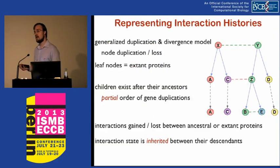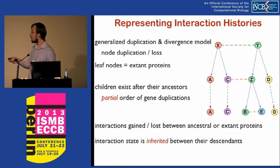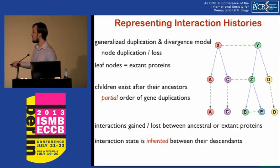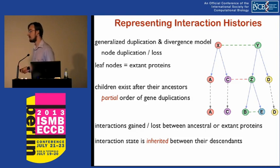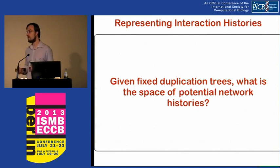We're looking at a generalized duplication and divergence model of interaction histories, with potential node duplication and node loss. Leaf nodes represent extant proteins. We have a partial order on the genes — children exist after their ancestors — which prohibits some interactions. When interactions are gained or lost, that state is inherited by the descendants. Given fixed duplication trees, the question is: what is the space of potential network histories and interactions we could have seen?